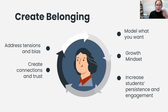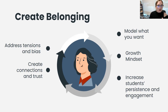It's really important that we're both creating belonging and addressing tensions and bias. When we exhibit bias, we should model what we want our students to do — acknowledge it, address it, apologize. We want to exhibit that growth mindset. All of these behaviors together will increase students' persistence and engagement, whether online, scheduled remote, flexible online, or whatever modality your institution is using.